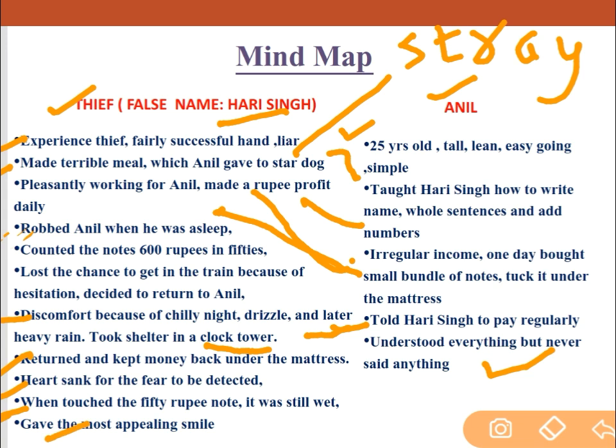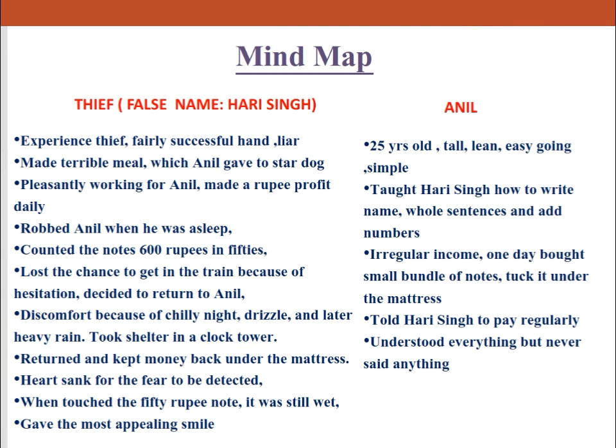Anil understood everything but never said anything. The thief gave his most appealing — that is, most attractive — smile, and that is how the story ends. I hope this mind map summary is clear to you. Just go through it one by one and it will be helpful for you.